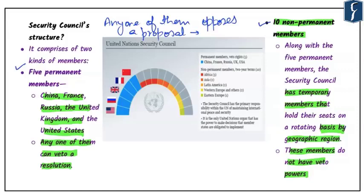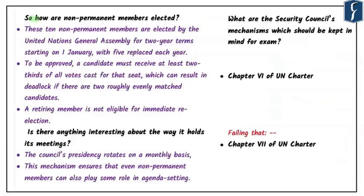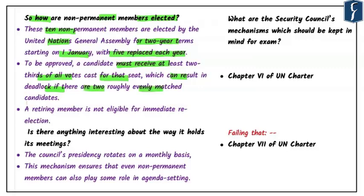The 10 non-permanent members are elected by the United Nations General Assembly for a period of two years, starting from January 1st, with five replaced each year. To be approved, a candidate country must receive at least two-thirds of all votes cast for that seat, which can result in deadlock if there are two evenly matched candidates. A retiring member is not eligible for immediate re-election.